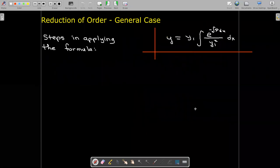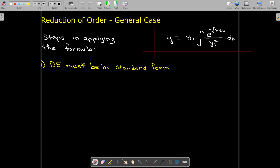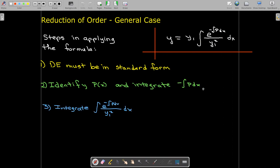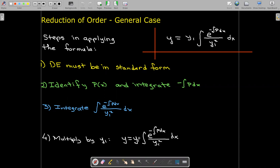To apply this formula: first, write the differential equation in standard form so the coefficient on y double prime is 1, then identify P of x. Perform the integration of negative P dx. Then raise e to that integral, divide by y1 squared, and integrate that expression. Finally, multiply by y sub 1 to get y2.